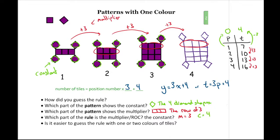So is it easier to guess the rule with one or two colors of tiles? You may have different opinions, but I would say generally speaking, two colors of tiles — one color for the multiplier and one color for the constant — tends to be a little bit easier to guess the rule. Because when you only have one color, you really need to pay attention and focus on what's changing to identify the constant and the multiplier.